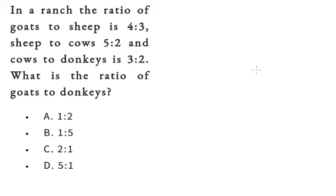Now I will show you how to answer. In a ranch, the ratio of goats to sheep is 4:3, sheep to cows is 5:2, and cows to donkeys is 3:2. What is the ratio of goats to donkeys?